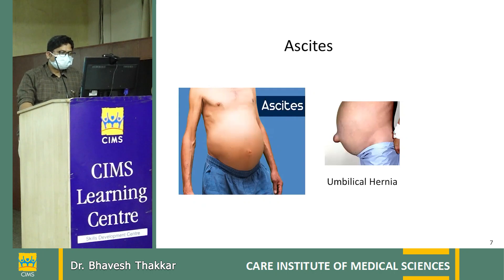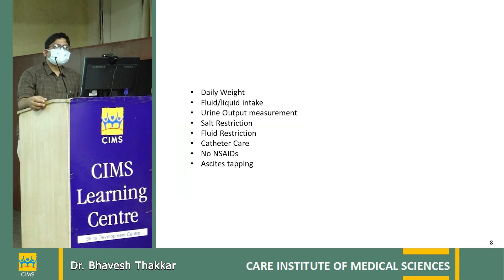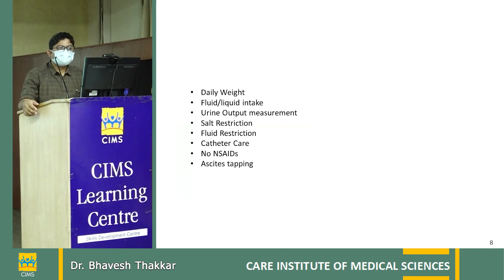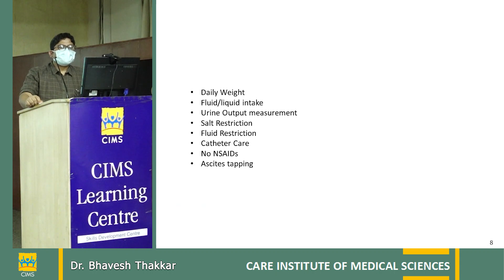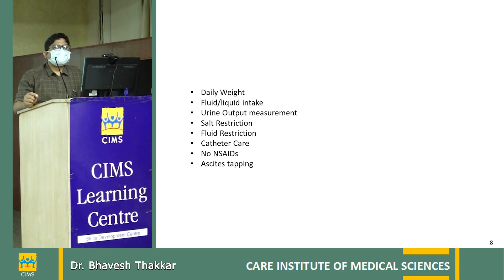Daily weight monitoring is essential in admitted cirrhosis patients with ascites. When using diuretics, expect a weight reduction of 0.3 to 0.5 kg per day (300–500 grams). Comparing admission and discharge weight helps assess whether hospital treatment was effective. Weight monitoring must be done daily and must not be skipped.